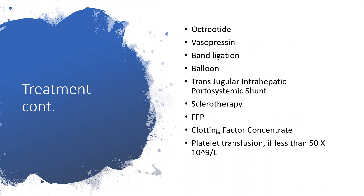You can give octreotide, vasopressin, band ligation, balloon, and transjugular intrahepatic portosystemic shunt could also be employed, sclerotherapy, fresh frozen plasma, clotting factor concentrate, and platelet transfusion if less than 50 times 10 to the power of 9 per liter.